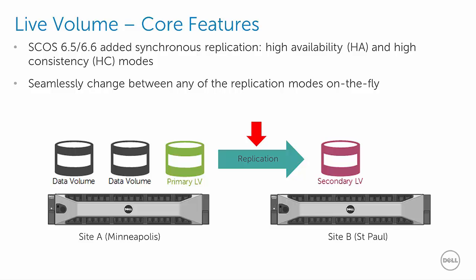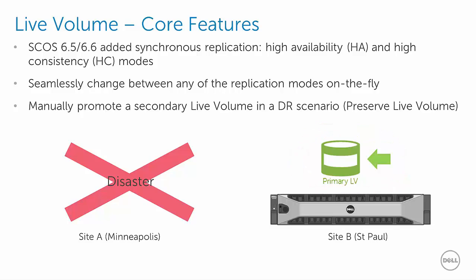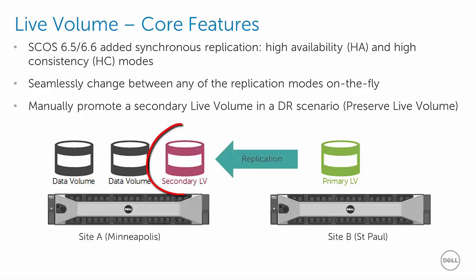Along with support for synchronous replication in SCoS 6.5 and 6.6 came two additional feature enhancements. The first is the ability for an administrator to promote a secondary live volume to primary without having to contact Dell support given a disaster that takes the primary site offline unexpectedly. This ability to recover a secondary live volume and promote it to primary is known as preserve live volume. After performing a preserve live volume operation, once the primary site comes back online again, the storage center ensures that the original primary live volume does not come back online as primary. This prevents an undesirable split-brain situation where data might otherwise be written to both live volumes at the same time, causing data inconsistencies or corruption.